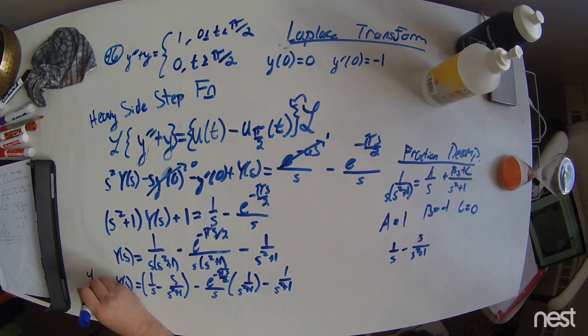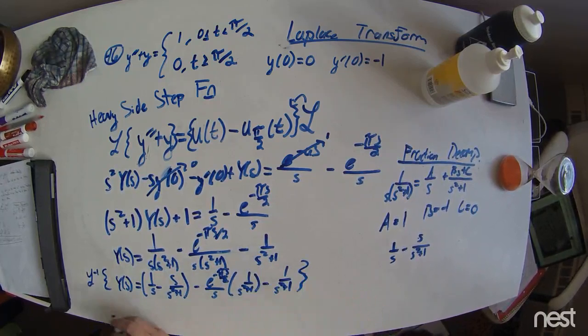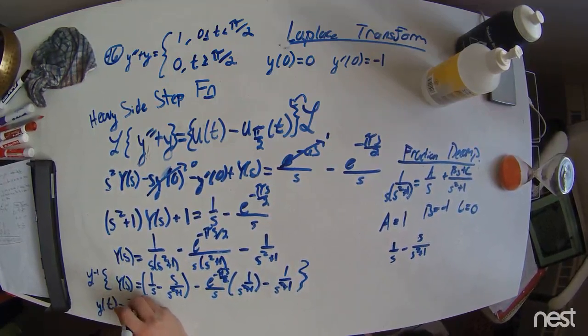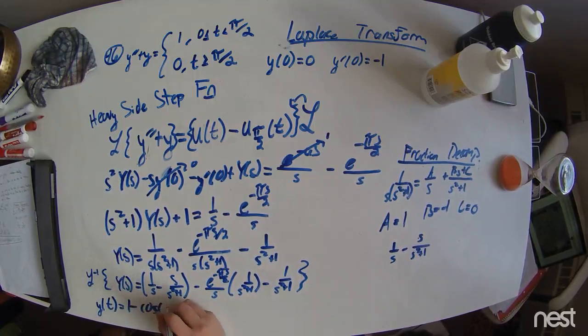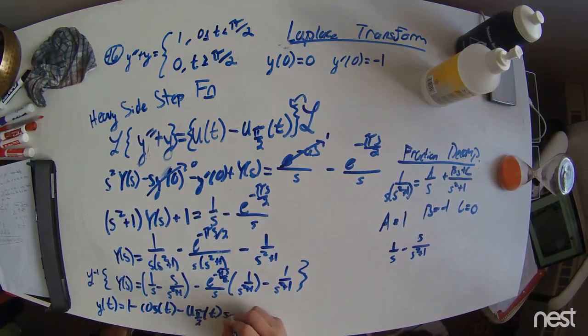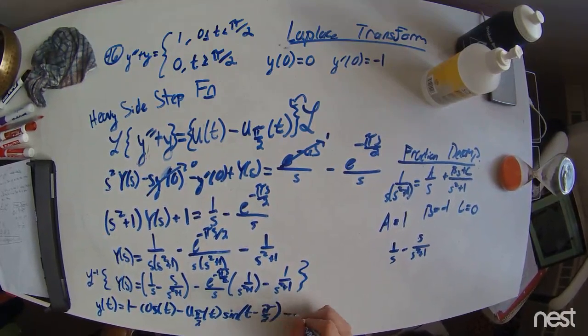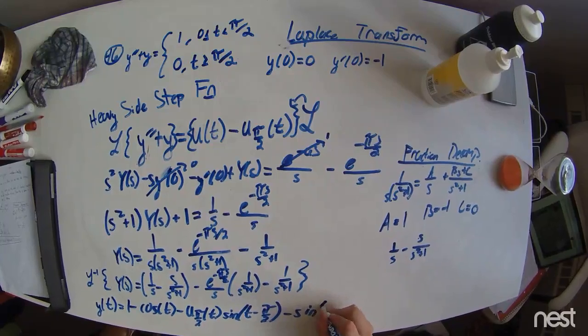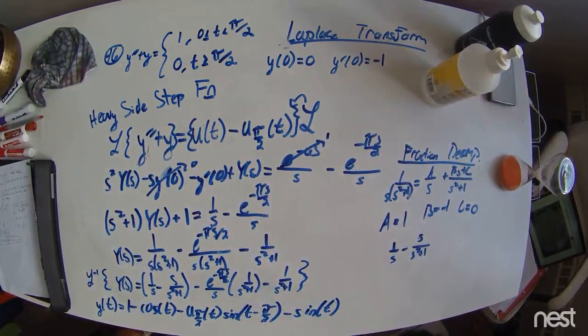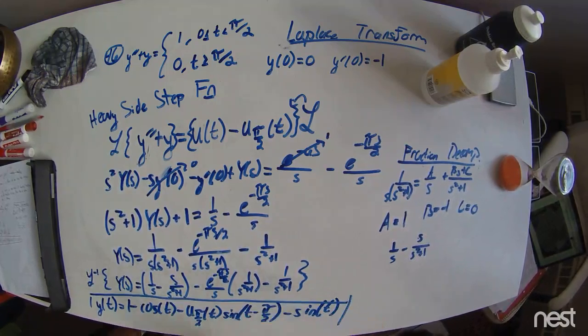Now, taking the inverse Laplace transform of this, we get our y of t. 1 minus the cosine of t minus u pi of t of t times the sine of t minus pi over 2 minus the sine of t. This is our final solution to this problem.